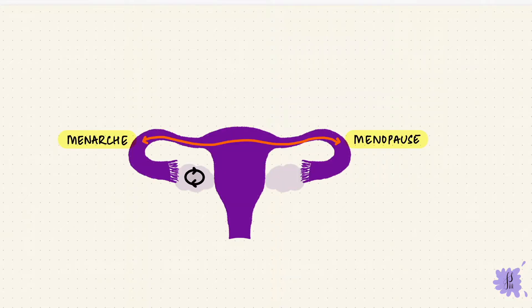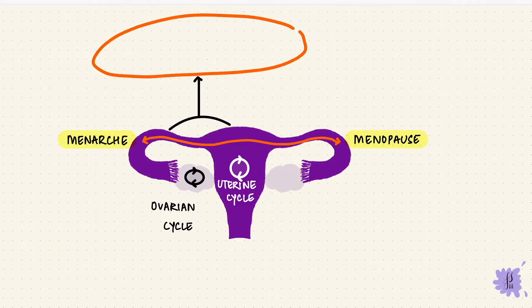The age at which the menstrual cycle starts is called menarche, and the cycles stop at menopause. In between these two phases, there are cyclical changes that happen in the ovary, called the ovarian cycle. There are also changes in the uterus, and that's called the menstrual cycle itself, or the uterine cycle. Both of these are under the influence of a hormonal cycle.